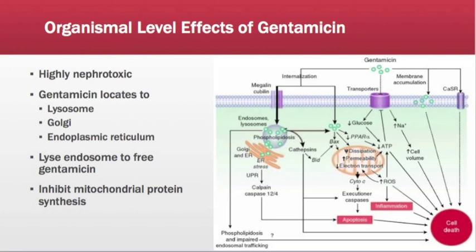Gentamicin causes phospholipidosis by blocking the negative charge that is crucial for the function of phospholipids. This effect builds up until a threshold is reached, at which the endosomal membrane lyses and gentamicin is released into the cytosol. There, it is able to interfere with mitochondrial protein synthesis in the same way that it does bacterial protein synthesis. Gentamicin not only inhibits protein synthesis but also blocks proteasomal degradation of the pro-apoptotic proteins Bax and Cathepsin, thereby inducing apoptosis.